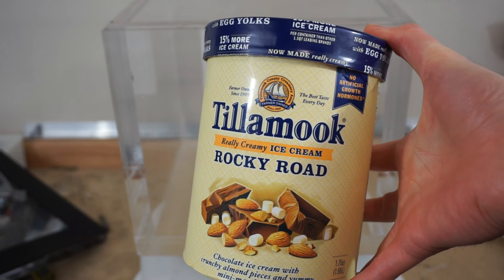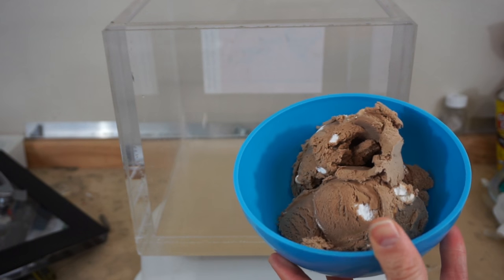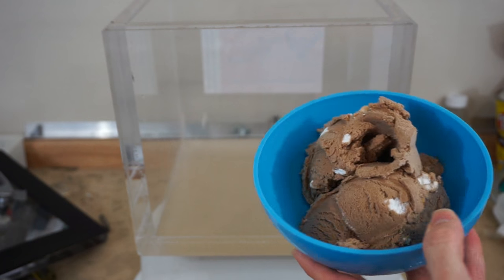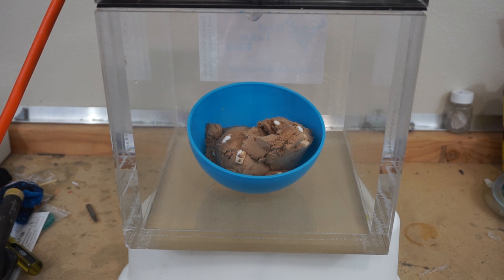And while we're on the milk subject, I thought I'd also throw in a little Rocky Road ice cream. We'll throw some ice cream in the vacuum chamber and see what happens. I propped up the bowl on its side a little bit so you can see down in it.